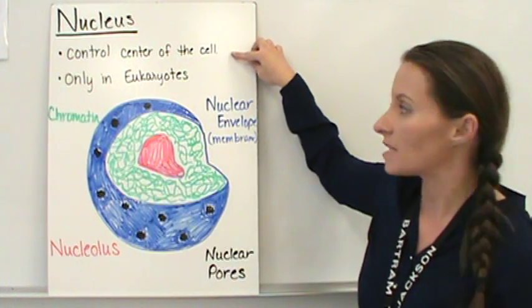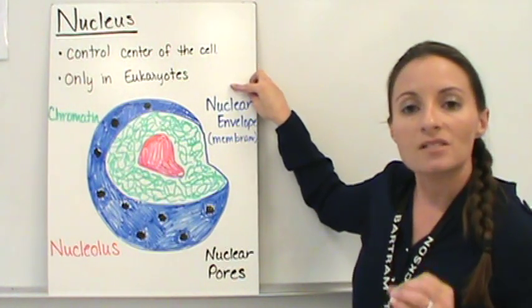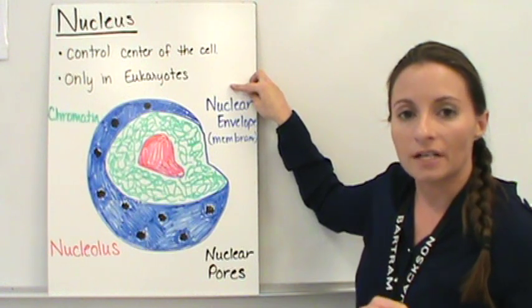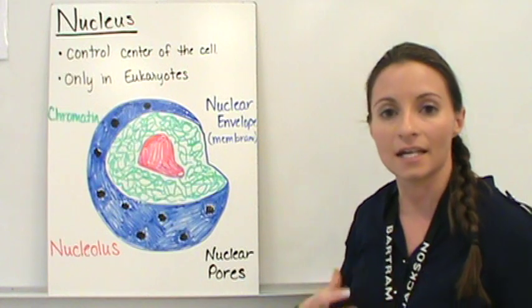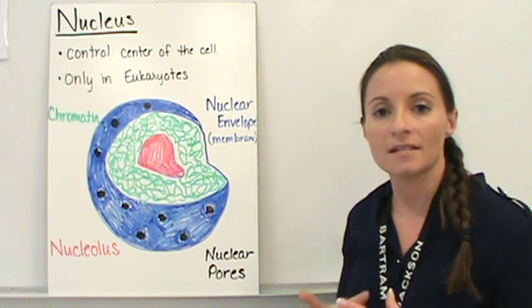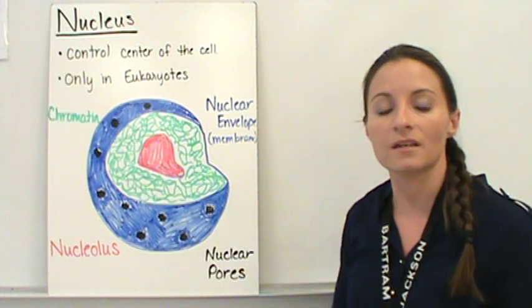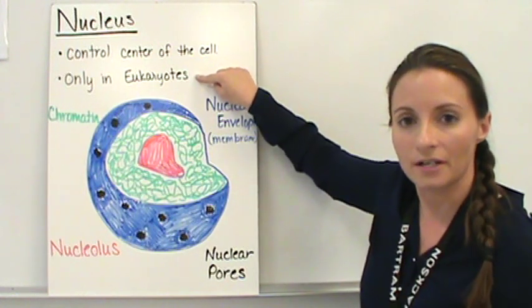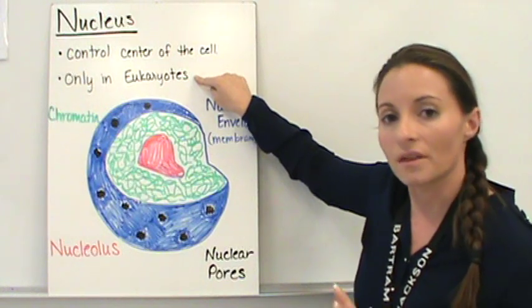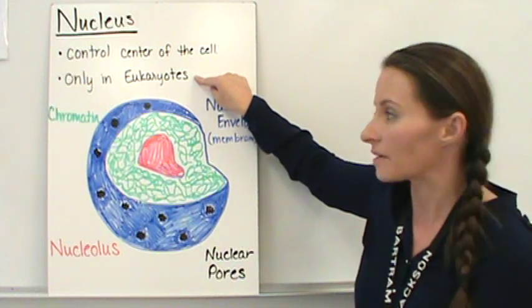So the nucleus is the control center of the cell but it's only located in eukaryotes. And it's the control center of the cell because it contains the DNA. It contains the DNA, so that DNA is what's giving all those messages. Again, only in eukaryotes. If you see a cell without a nucleus, it's going to be a prokaryote.